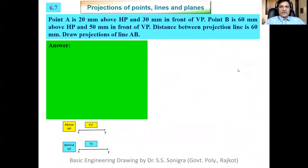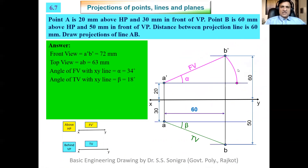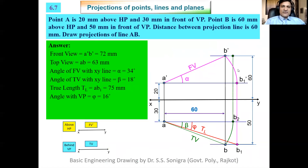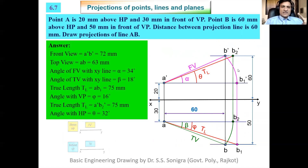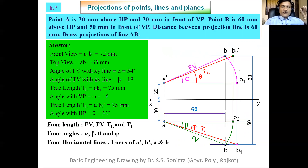Last problem (fast): Locate A', B', A, B; draw front view A'B' and top view AB; measure all parameters. Front view A'B' = 72 mm, top view AB = 63 mm, alpha = 34°, beta = 18°, true length = 75 mm, theta = 32°, phi = 16°. In any projection of a line problem, verify four lengths (front view, top view, two true lengths), four angles (alpha, beta, theta, phi), four horizontal locus lines (locus of A', B', A, B), and four vertical lines (from A, B, B1, B2).